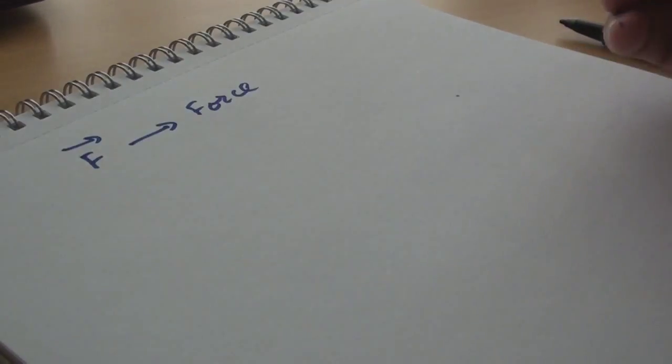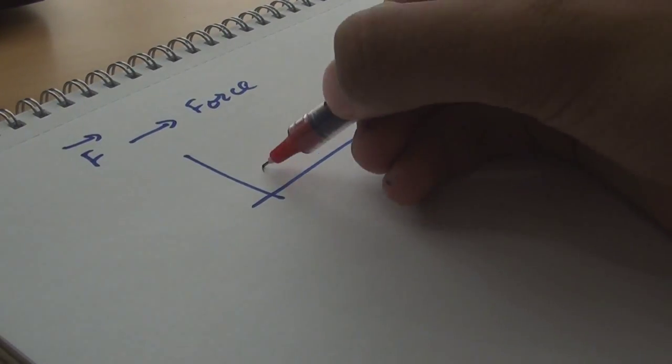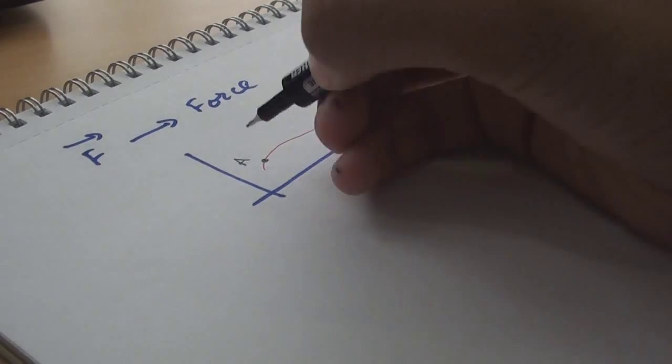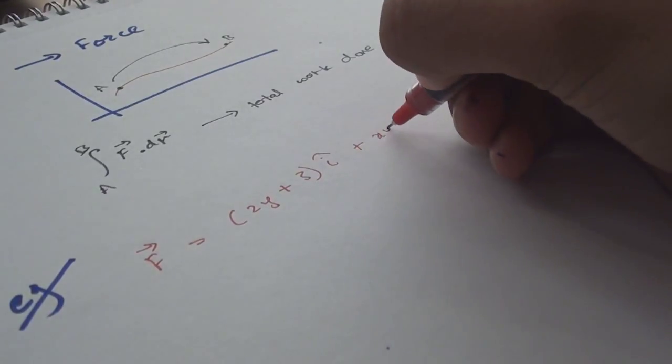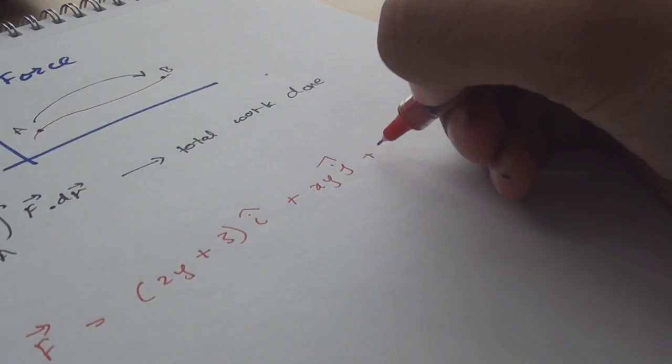The line integral arises naturally in mechanics. And if f represents forces acting on a particle moving along an arc a, b, then the total work done by f during the displacement from a to b is given by the line integral of f dr.